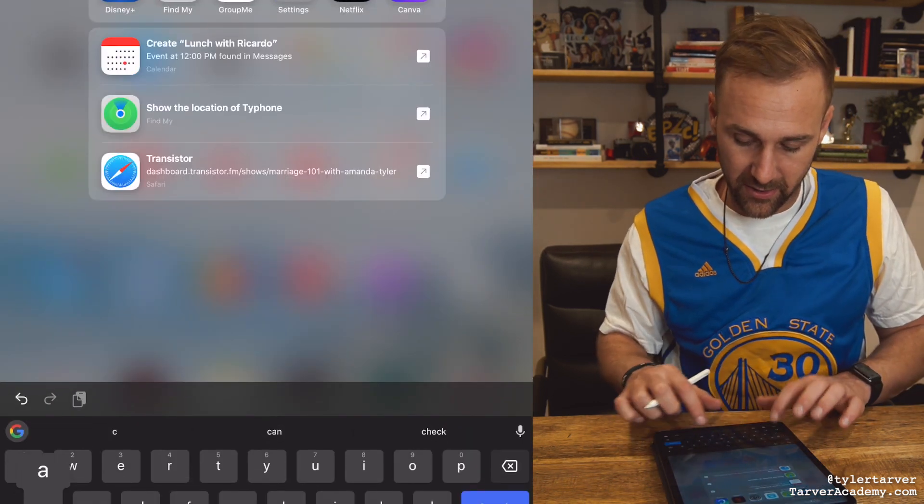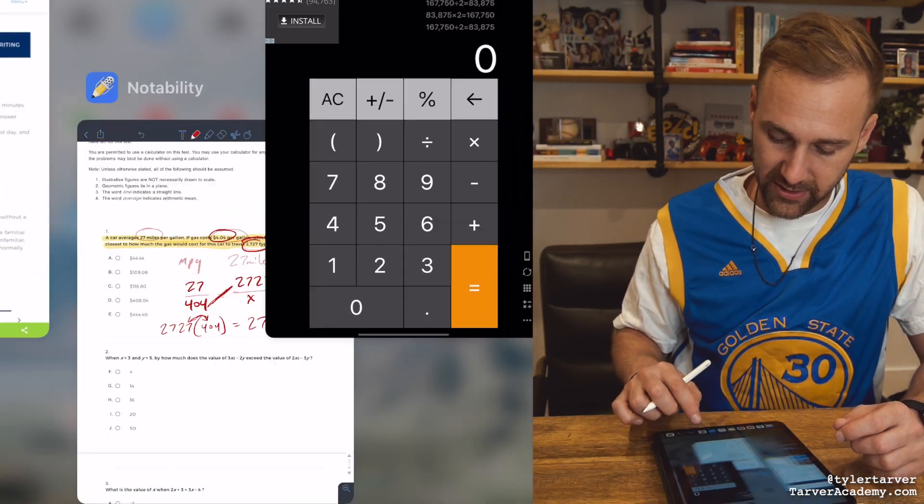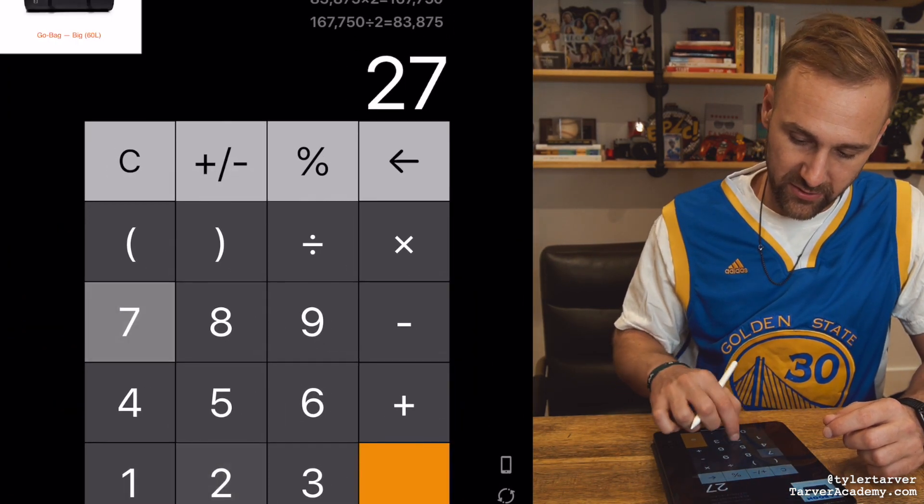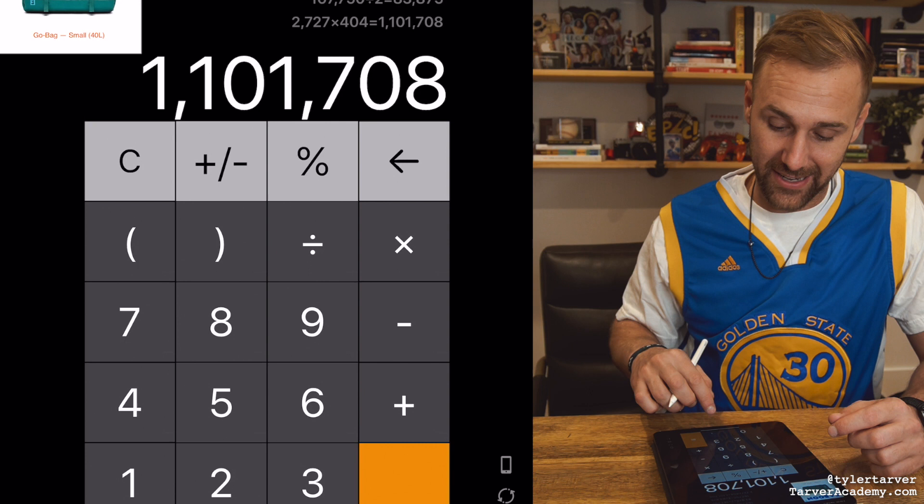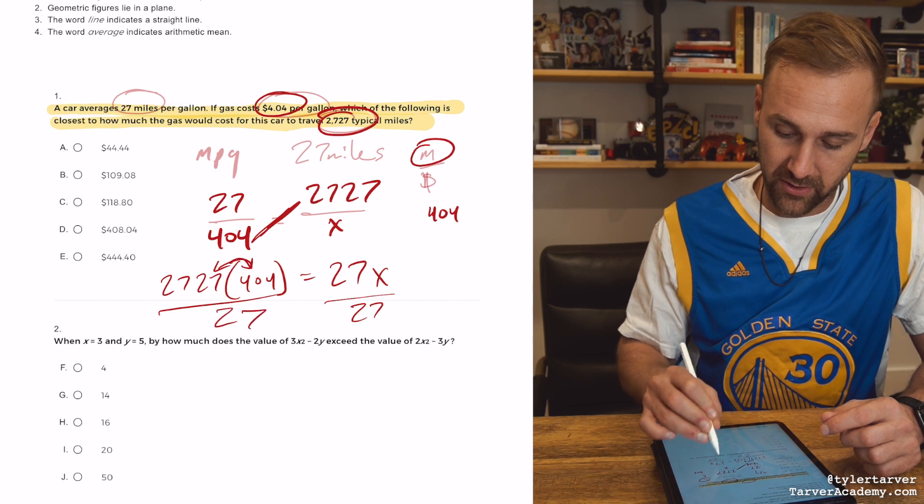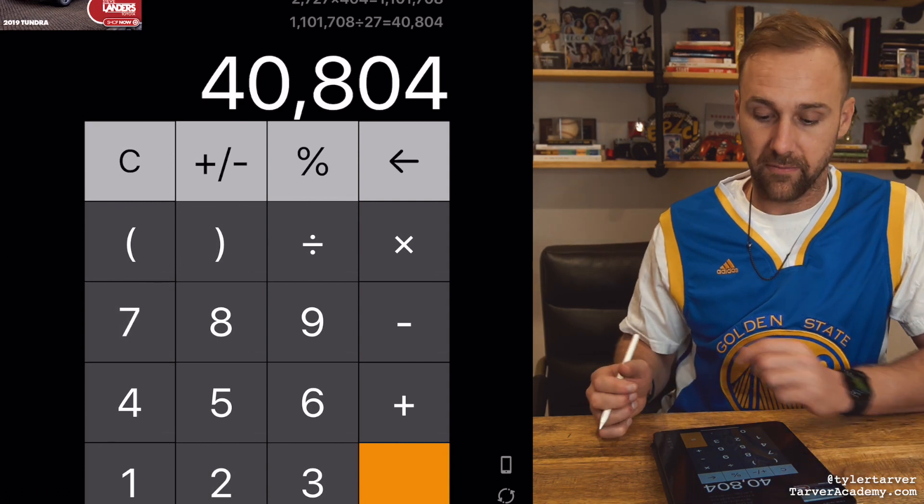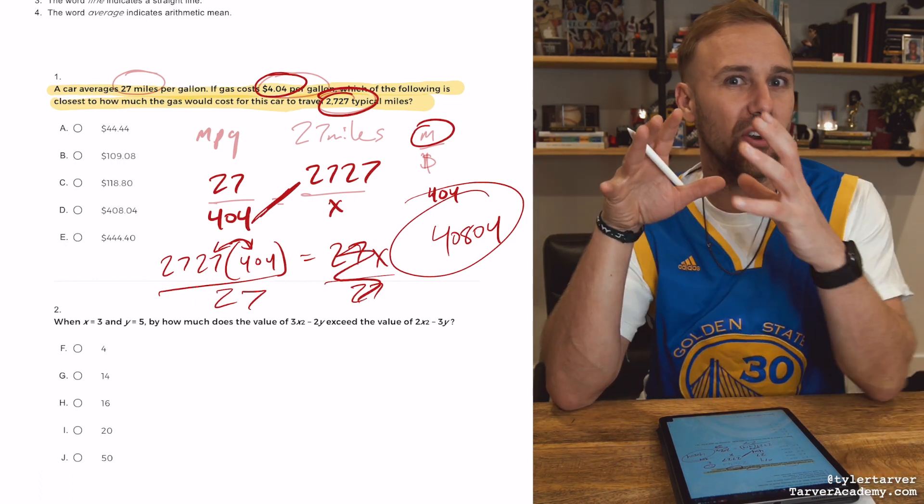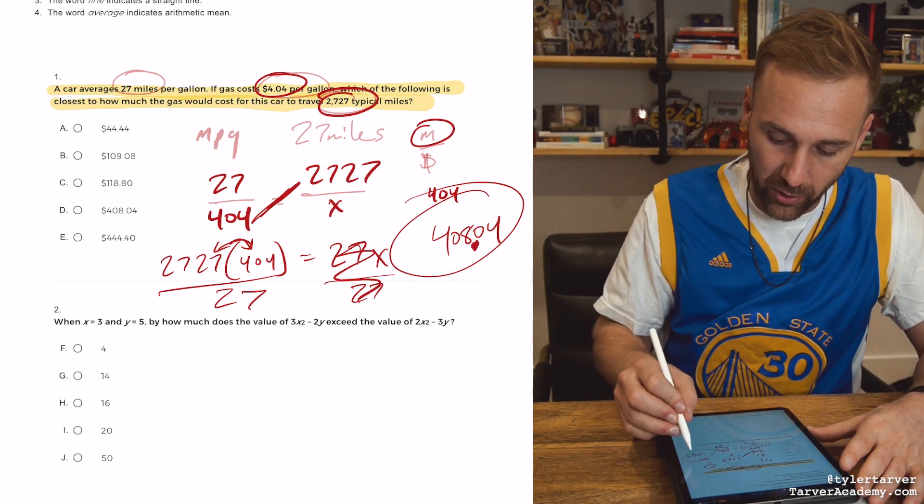But we need to do that. So I'm going to get my calculator out. Calculator. Which one's the good one? That one. Maybe. Okay, so we want to do 2727 times 404. So 2727 times 404. And then I'm going to divide that by my other 27. Remember? Because I've got to divide 27 to be over here. That'll cancel it out. So divided by 27. Okay, so we're talking 40,804. Okay, now you got to keep in mind, remember what I did earlier? I converted it from dollars to pennies. So we need to put that decimal in like it's pennies. And then we're going to look and see.